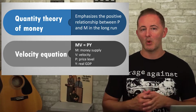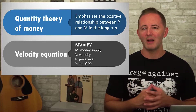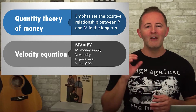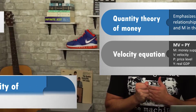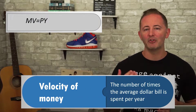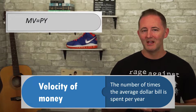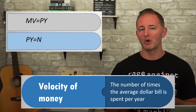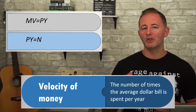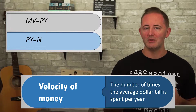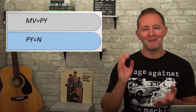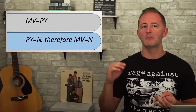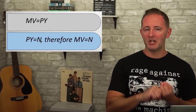M is for money supply, V represents the velocity of money, P is the price level, and Y is real GDP. Velocity of money is the only new concept here — it refers to the number of times the average dollar bill is spent per year. Recall from Unit 2: P times Y equals nominal GDP (N). Therefore, M times V also equals nominal GDP. So the money supply times the number of times the average dollar bill is spent equals total spending.